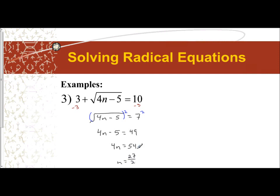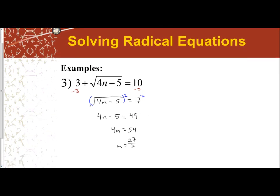Right now, this is what I think my answer is, but we always have to check it. Off to the side, I'm going to check my answer. I have 3 plus the square root of 4 times 27 halves minus 5, which should be equal to 10.